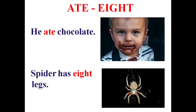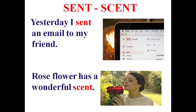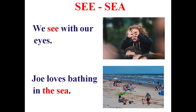Eight and ate: 'Eight' is the number; 'ate' is the past tense of eat — he ate chocolate. A spider has eight legs. Ant and aunt: 'The ant works hard'; 'My aunt is a nurse.' Sent and scent: 'Yesterday I sent an email to my friend' — past form of send; 'A rose flower has a wonderful scent' — fragrance.